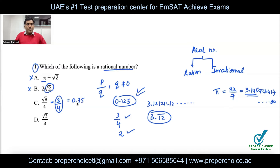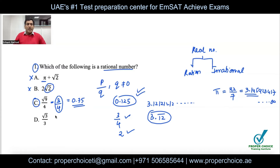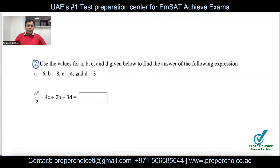3/4 can also be written as 0.75, which is a terminating decimal, confirming it is rational. So option C is the correct answer. Once you confirm one option is correct, don't waste time checking the others.